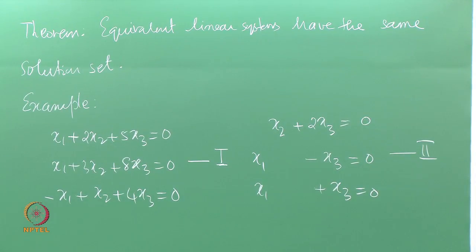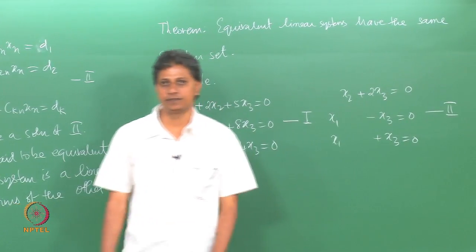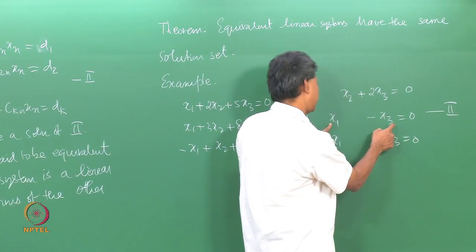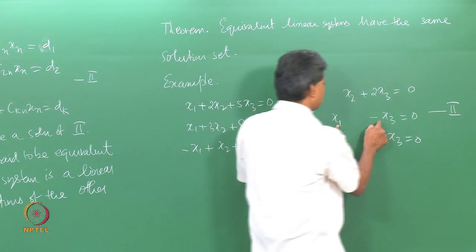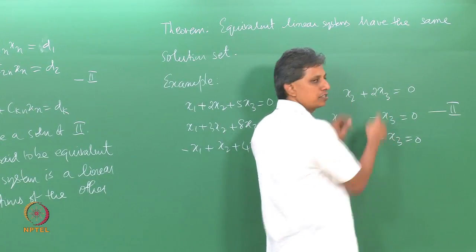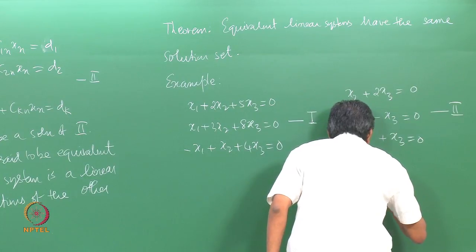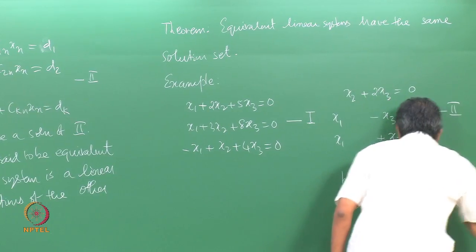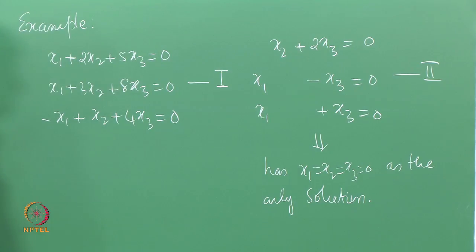Let us solve system 2 quickly. From the second equation, x₃ = x₁. Substituting into the third equation gives 2x₁ = 0, so x₁ = 0. Going back to the second equation gives x₃ = 0, and from the first equation x₂ = 0. So system 2 has x₁ = x₂ = x₃ = 0 as the only solution.